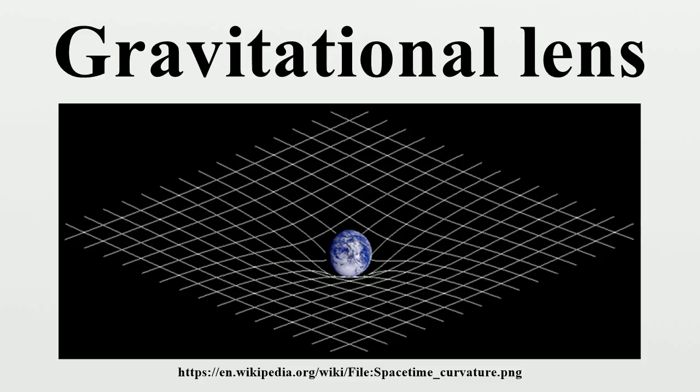There are three classes of gravitational lensing. One: strong lensing, where there are easily visible distortions such as the formation of Einstein rings, arcs, and multiple images.